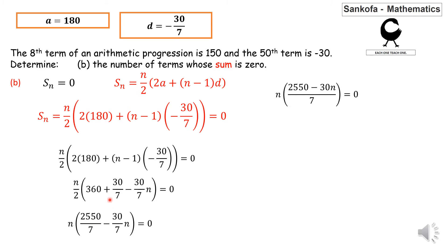I remove the brackets by multiplying throughout by 7. Zero times 7 gives you 2550n minus 30n squared equals 0. This is a quadratic but I have two terms so I can take out a common factor.